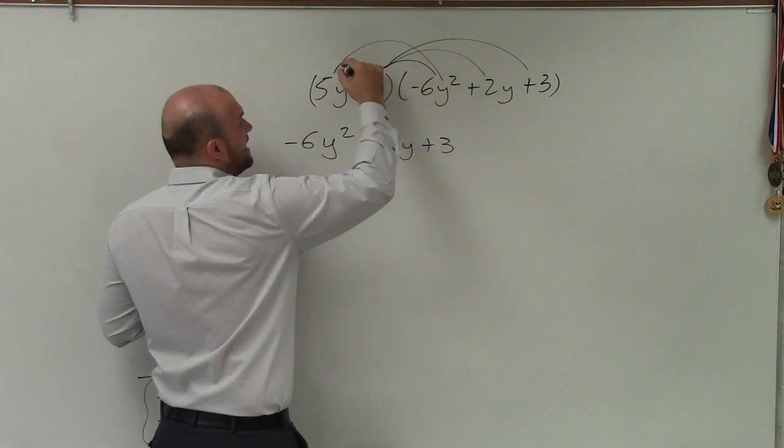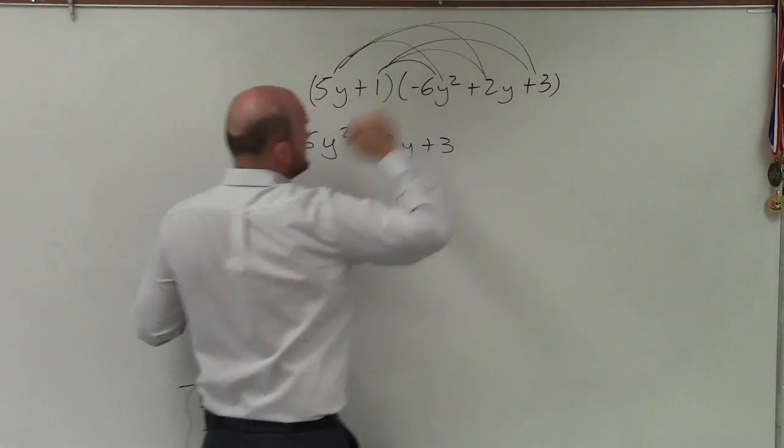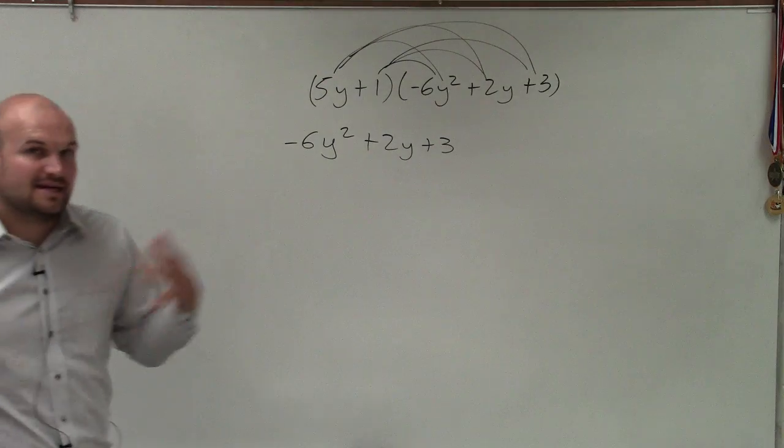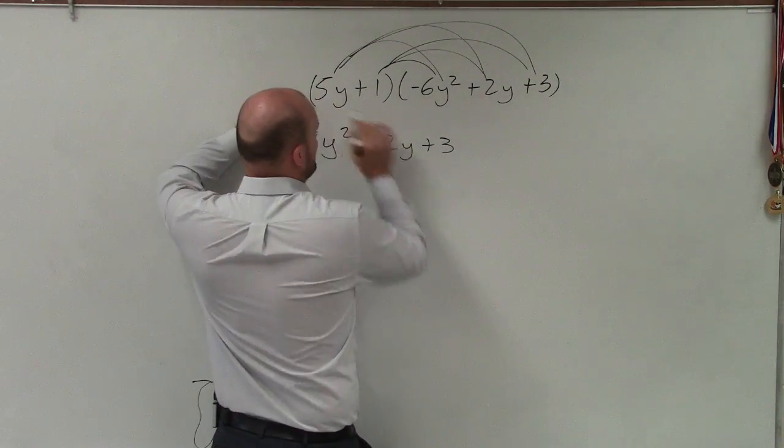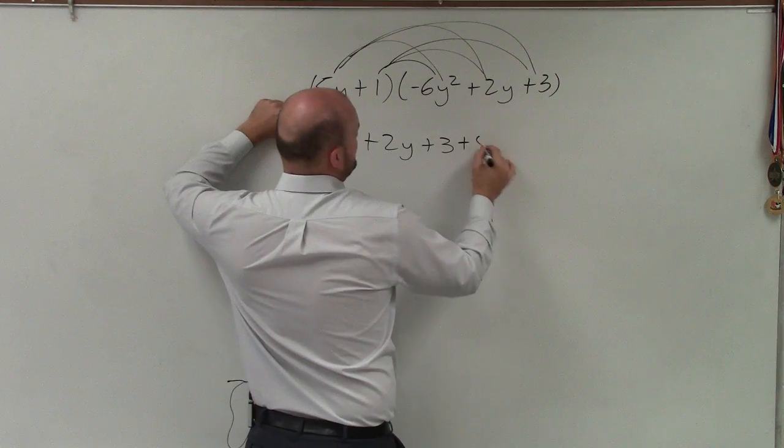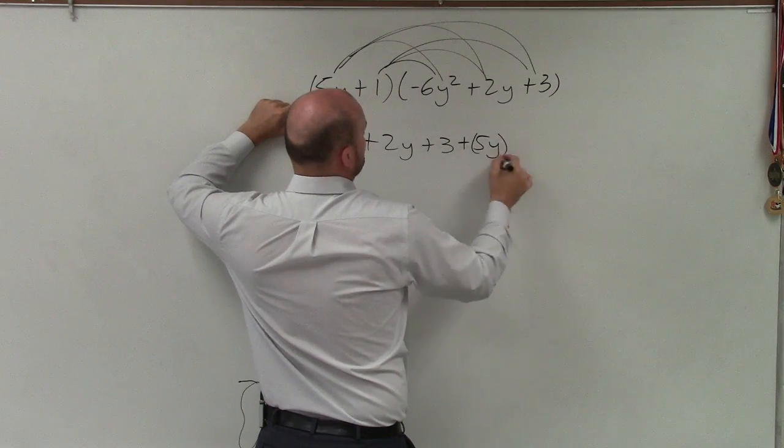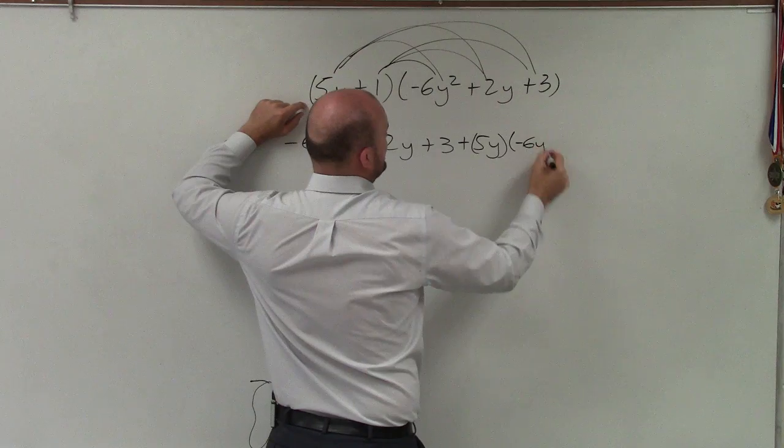Then I need to multiply 5 times every single one of those terms. And so I'm going to do this, actually, I'll add this up. So therefore, I'll be 5 plus 5y times negative 6y squared.